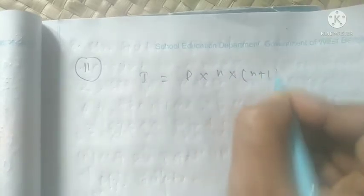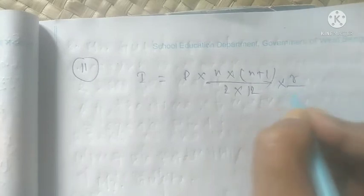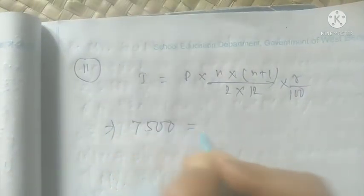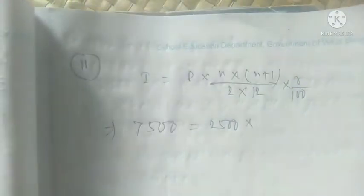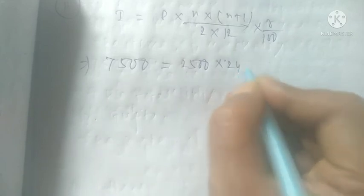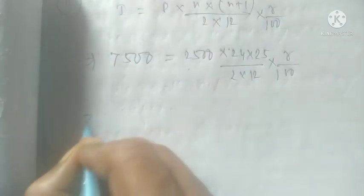Now for the second part, determine the rate of interest. Apply the total interest formula: I equals P into N into (N+1) by 2 into 12 into R by 100. So 7500 equals 2500 into 24 into 25 by 2 into 12 into R by 100. Cancel 2500 with 100 leaving 25, cancel 2 into 12 with 24 leaving 25. So 7500 equals 25 into 25 into R.